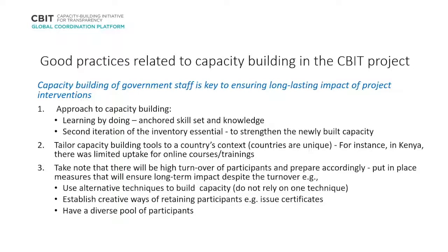We took a learning-by-doing approach, which is laborious and painstakingly slow, but better because it ensured knowledge was fully anchored. People understood — sector by sector — the kind of information they need to collect, collate, and analyze to track emissions in their sector. Each sector now understands how to calculate emissions, identify key categories, and analyze and interpret results, which is important since by law each sector is supposed to have a climate change directorate desk. This approach allowed the Climate Change Directorate to assemble the national inventory from sector-level work.